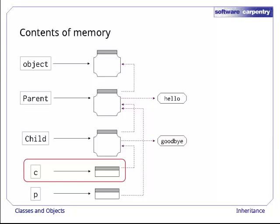When we create the object c of class child, Python puts a reference in the object to its class. When we call c.goodbye, Python follows that reference from c to child, finds the method, and executes it. When we call c.hello, Python follows the reference to child, fails to find hello, but then sees that child has a reference to another class parent. When Python follows that link, it finds that parent does have the method hello, so everything's okay.